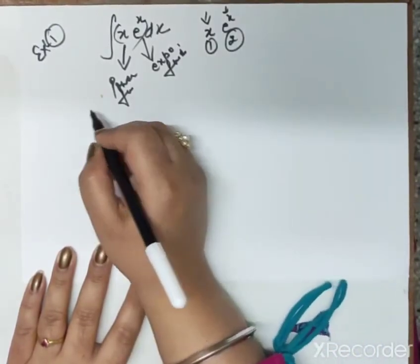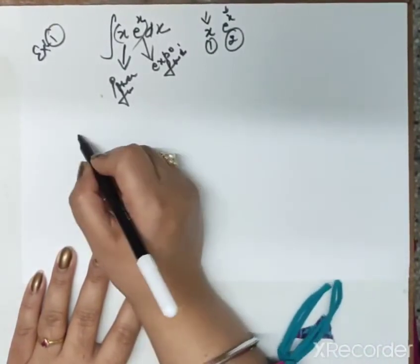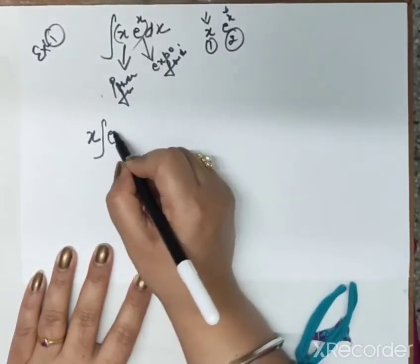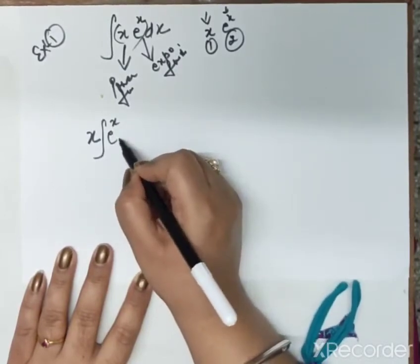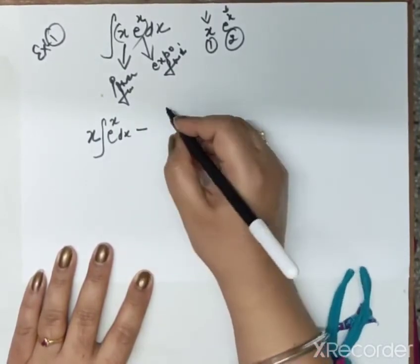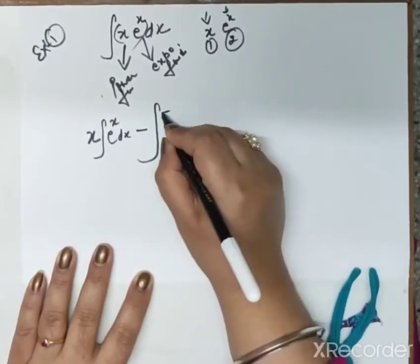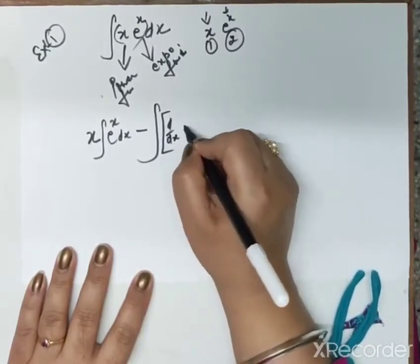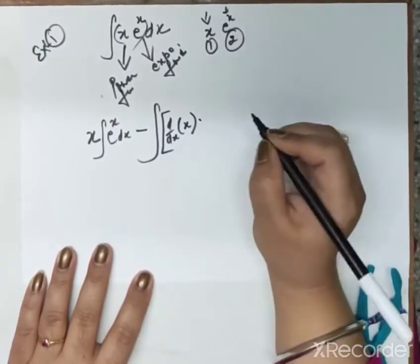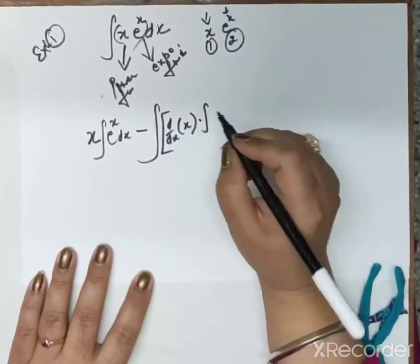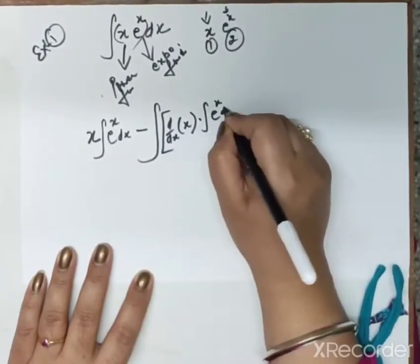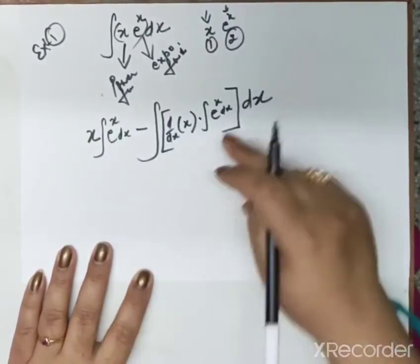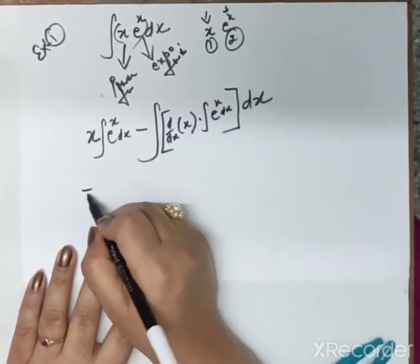Applying the formula: u as it is, so x, then × integration of second, i.e., ∫ e^x dx, minus big bracket — derivative of first function d/dx(x) × integration of second e^x dx — close bracket, and then the whole thing integrated with dx.